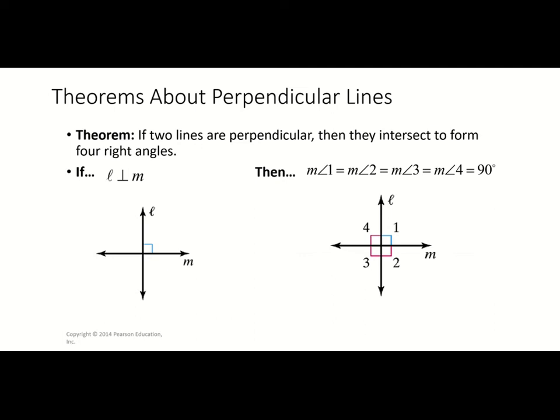Here is another theorem: if two lines are perpendicular, then they intersect to form four right angles. So if l is perpendicular to m, all four angles formed where l meets m are 90-degree right angles.